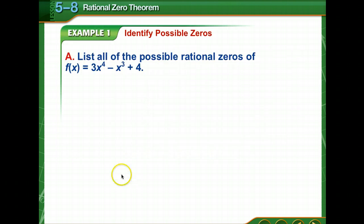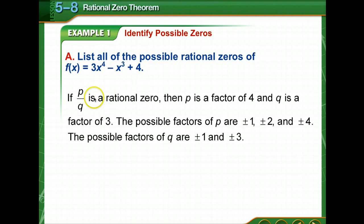Let's look at identifying possible zeros. We're going to list all the possible rational zeros of 3x to the 4th minus x to the 3rd plus 4. Now, if p over q is a rational zero, then p is a factor of 4 and q is a factor of 3.